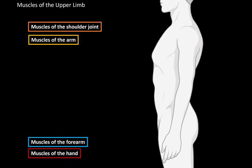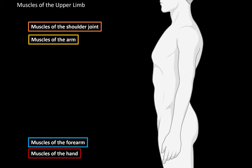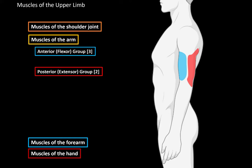The muscles of the arm are what we're going to focus on today, and they're divided into two main groups. We have the anterior group, which are also called the flexor muscles — there are three muscles here — and the posterior group, or the extensor muscles, and there are two muscles here in the posterior region.